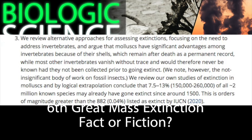Outcome three: "We review alternative approaches for assessing extinctions, focusing on the need to address invertebrates, and argue that mollusks have significant advantages among invertebrates because of their shells, which remain after death as a permanent record, while most other invertebrates vanish without a trace, and would therefore never be known had they not been collected prior to going extinct. We note, however, the not-insignificant body of work on fossil insects. We review our own studies of extinction in mollusks, and by biological extrapolation conclude that 7.5 to 13 percent of all 2 million known species may have already gone extinct since around 1500 — orders of magnitude greater than the 882, or 0.04 percent, listed as extinct by IUCN."